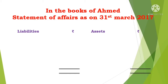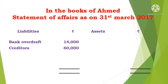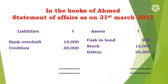Bank balance 14,000 is on the asset side. On the liability side, creditors 60,000. On the asset side: cash in hand 800, stock 12,000, debtors 34,000, plant 80,000, furniture 40,000.